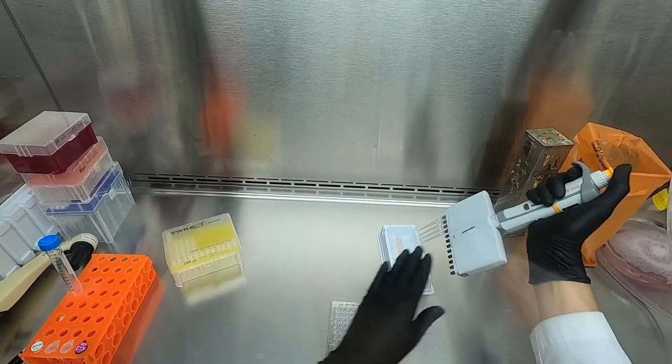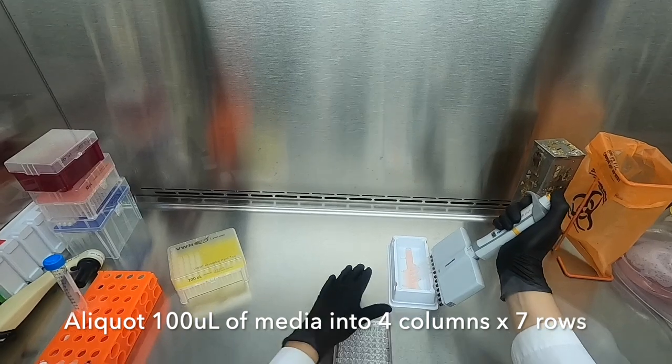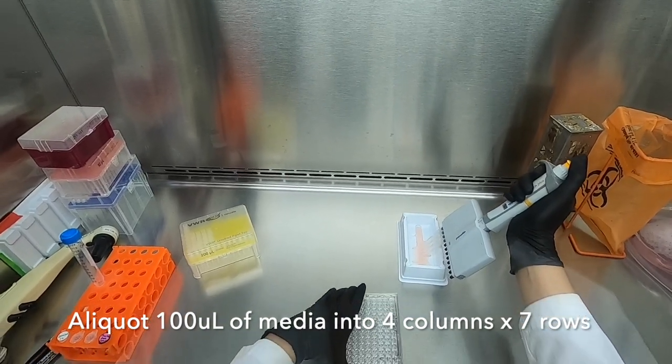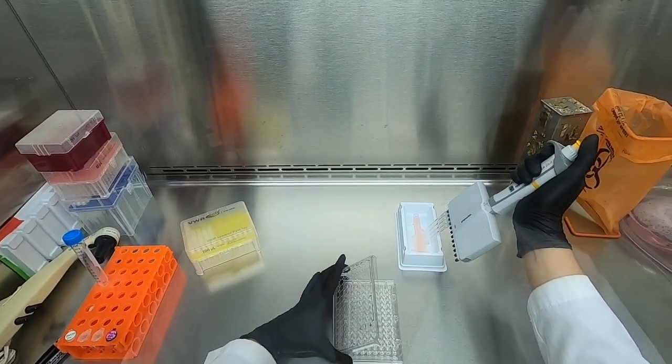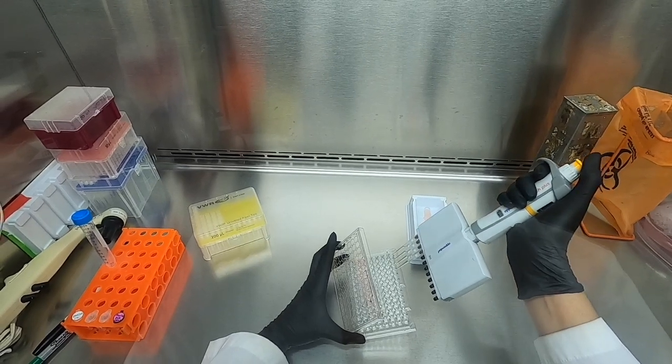We will now proceed to aliquot 100 microliters of media into a 4x7 grid containing our seven concentrations with four replicates for each.